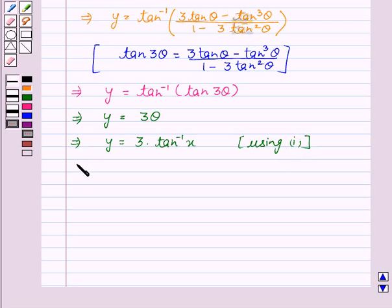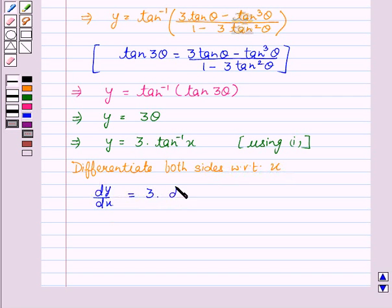Now, differentiate both sides with respect to x. dy by dx equal to 3 times dy by dx of tan inverse x.